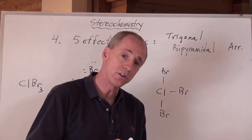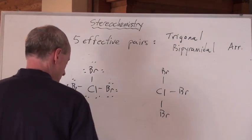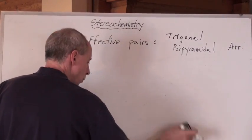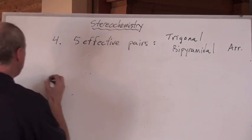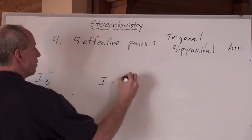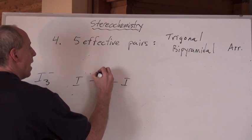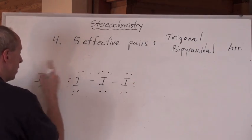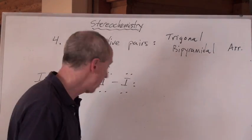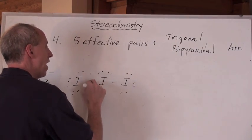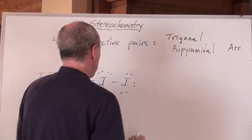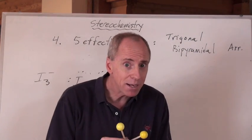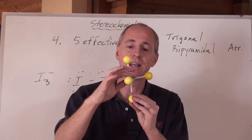And then, remember that one that we did before as a Lewis diagram? It was I3-. And I3-, when we drew that before, looked like this, remember - the I's here, the I's here, the I's here, and we had the two lone pairs here and here. That's going to actually be 22 valence electrons accounted for. One, two, three, four, five effective pairs. Trigonal bipyramidal arrangement. And where do you put those three lone pairs in that arrangement? In the plane, boss, the plane.